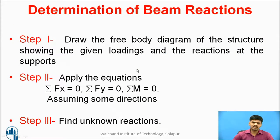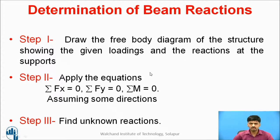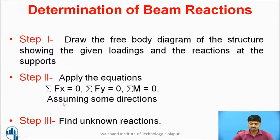These are the basic steps to identify support reactions — three steps, common for all. Step one: draw the free body diagram for your given structure, showing the loadings — UDL, UVL, point load — by considering your support condition: simple support, roller support, hinge support, fixed support, etc. Step two: apply the three static equations — summation Fx = 0 for all horizontal forces, summation Fy = 0 for all vertical forces, and consider moment at any one point. Here you also assume the directions. Step three: find the unknown reactions.